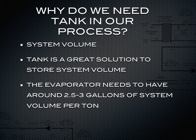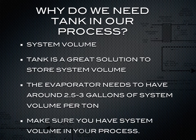For example, if you have a 5-ton chiller, there needs to be around 15 gallons of system volume. A 30-ton chiller will need around 90 gallons of system volume. If you don't have enough system volume in your process, you're basically going to short cycle your compressor, shut down your refrigeration system, and the piece of equipment is not going to get cooled.